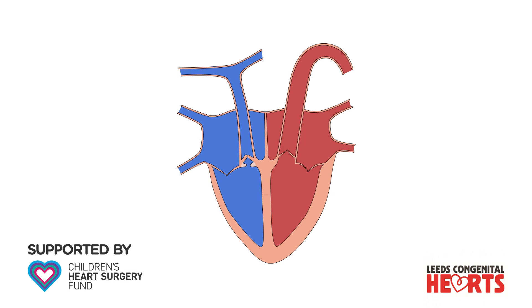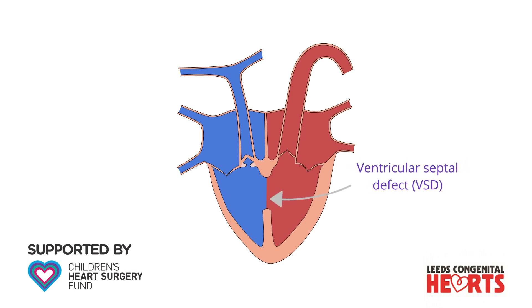The other main abnormality in Tetralogy of Fallot is a hole in the wall that divides the right and left ventricles. This is called a ventricular septal defect, or VSD.